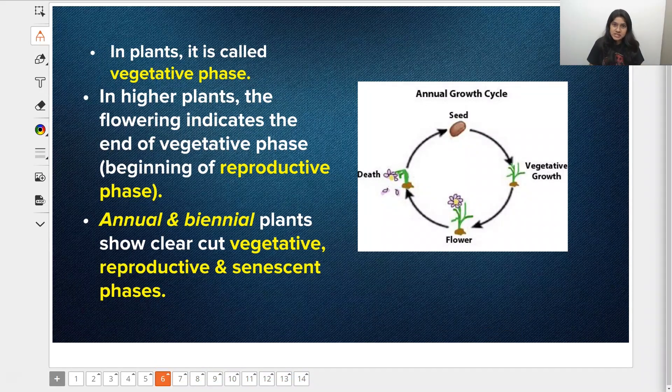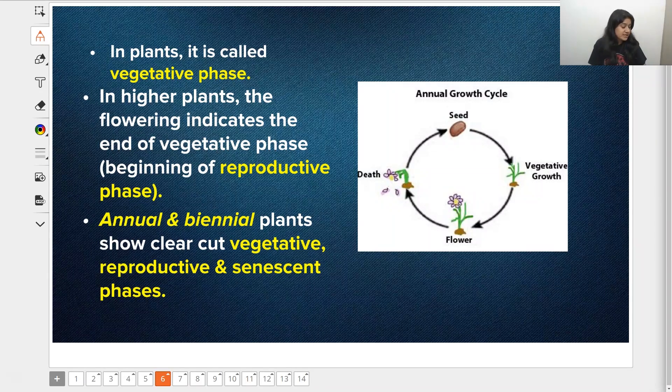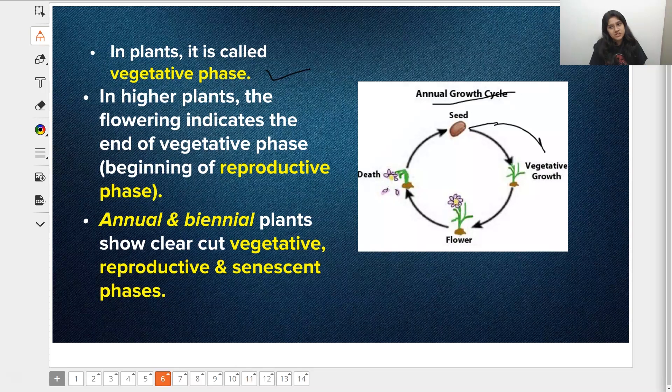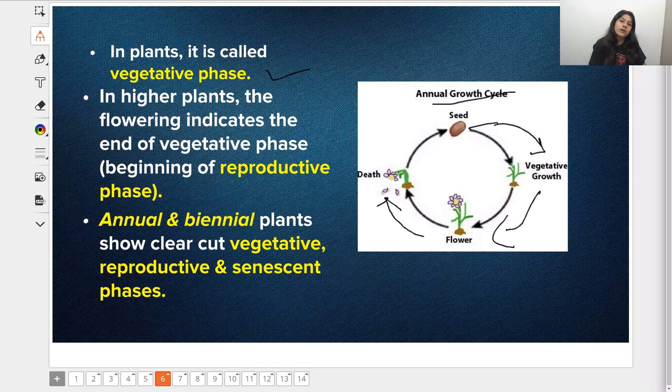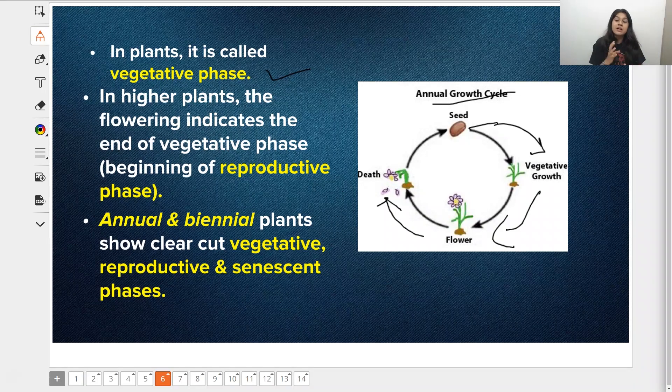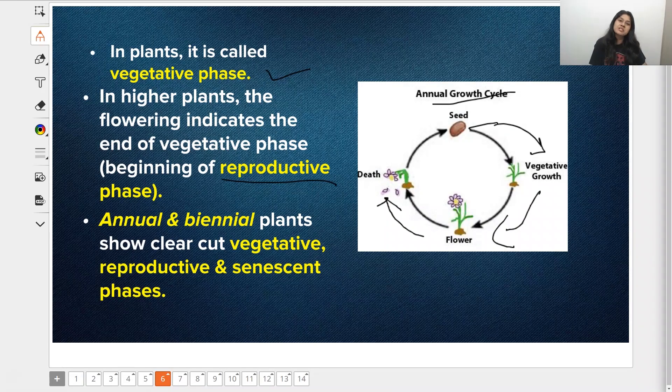We were discussing various different phases. Just like in humans, we have the same thing in plants. That phase is called the vegetative phase. Here on the screen, we see this cycle: seed comes to vegetative growth phase, from vegetative growth it comes to flowers. Once flowers come, it's the beginning of the reproductive phase. Once flowering is over, the plant dies and the whole cycle starts again.